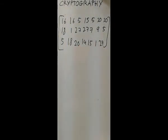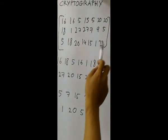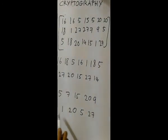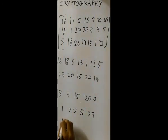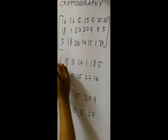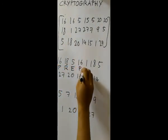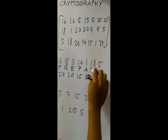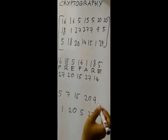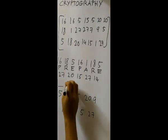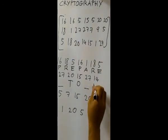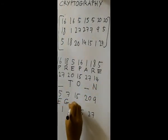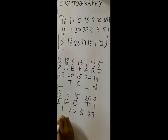After we get this matrix, we return it to linear form. Then we assign back the numbers to letters. Previously we did 1, 2, 3 equal to A, B, C. So it will become: P, R, E, P, A, R, E — space — T, O — space — N, E, G, O, T, I, A, T, E. And this blank at the end is the filler we added in the matrix.